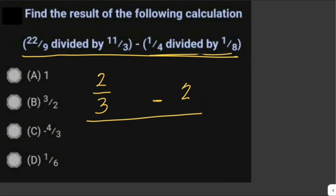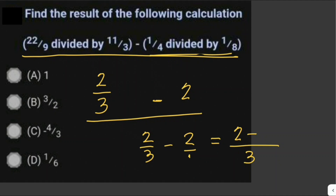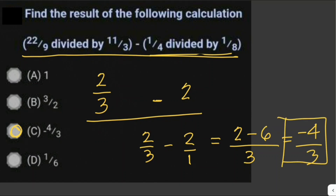Now we can solve 2/3 minus 2. We get the LCD, which is 3. 3 divided by 3 is 1 times 2, that is 2. Then copy the minus sign. The denominator of 2 is considered 1, so 3 divided by 1 is 3, times 2 is 6. So 2 minus 6 is negative 4 over 3. Our answer is negative 4 over 3. The answer is letter C.